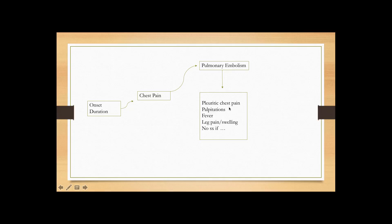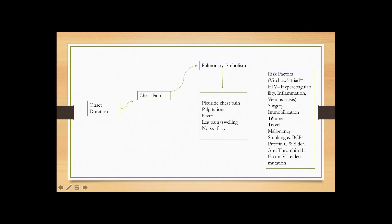In addition to typical chest pain with shortness of breath, important risk factors to keep in mind include: recent surgery, a period of immobilization due to surgery or travel, trauma, or malignancy — because malignancy is a hypercoagulable state that stimulates a cascade of reactions. Whenever any of these are present — surgery, immobilization, trauma, travel, or malignancy — you must keep pulmonary embolism high on your radar.